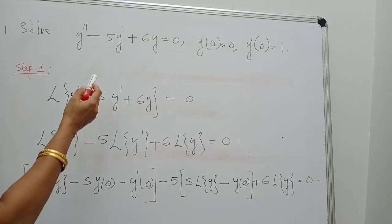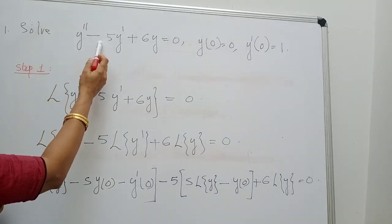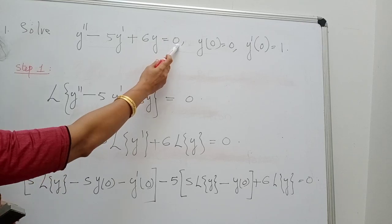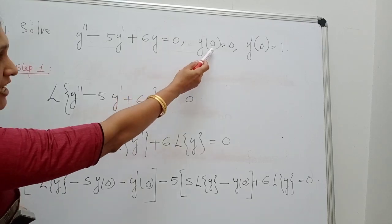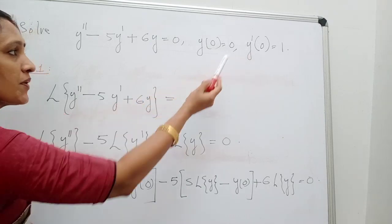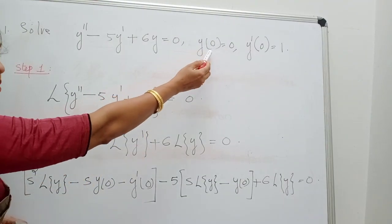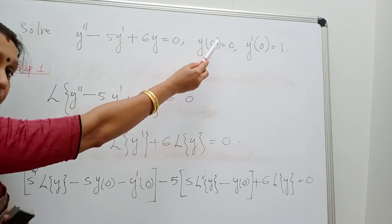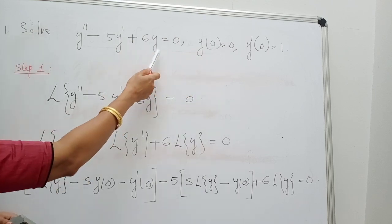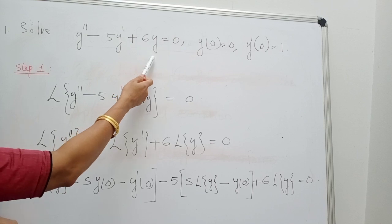Consider this example: Solve y'' − 5y' + 6y = 0 with y(0) = 0 and y'(0) = 1. This is an initial value problem — you are given a few initial conditions. We want to solve this ordinary differential equation.